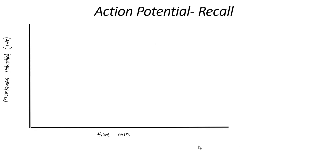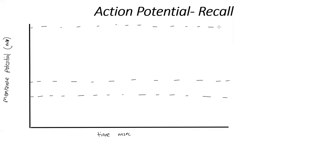Let's draw in our reference values. The first reference value is that of rest, so negative 70 is our resting value. Then let's draw in our threshold. Let's also think about our maximum membrane potential. So we've got negative 70, negative 55, and then positive 30.